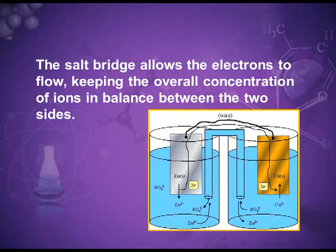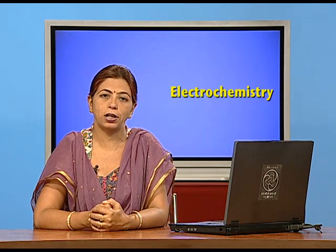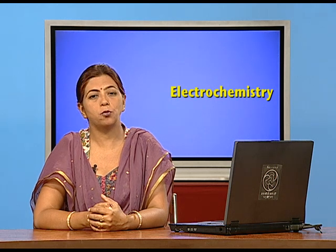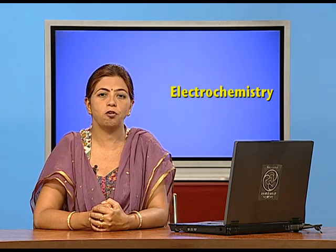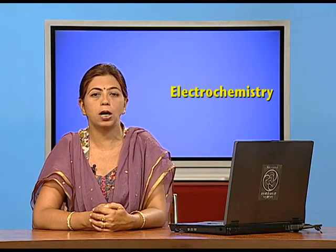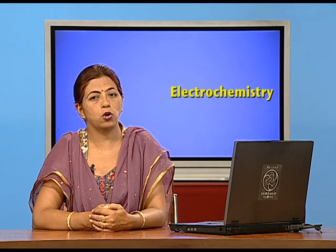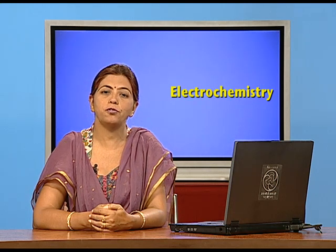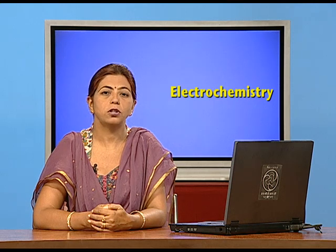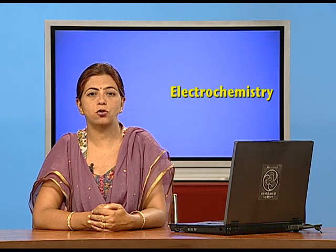From the figure, the direction of electron flow is from zinc to copper. Since the direction of current flow is opposite to the direction of electron flow, current flows from copper to zinc. This completes the explanation of the working of an electrochemical cell, also known as a galvanic or voltaic cell, using the zinc-copper couple as an example, including the utility of the salt bridge and the directions of electron and current flow.